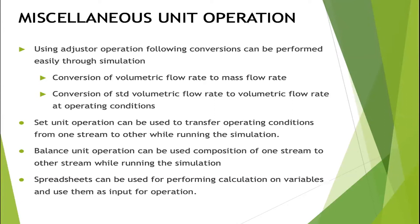A Spreadsheet unit operation allows mathematical manipulation of stream properties as inputs. For example, if you have a temperature of 60°F and always want to add 20°F to feed as 80°F into the flowsheet, and the base temperature changes to 70°F, the spreadsheet automatically updates the output to 90°F. This makes the Spreadsheet operation very useful for dynamic input manipulations in the flowsheet.